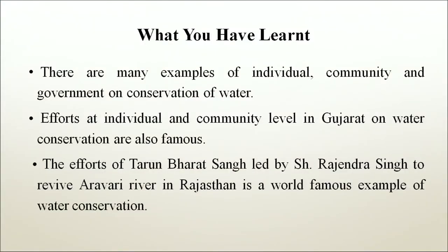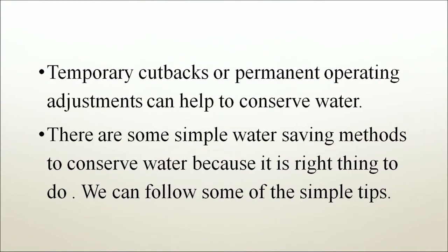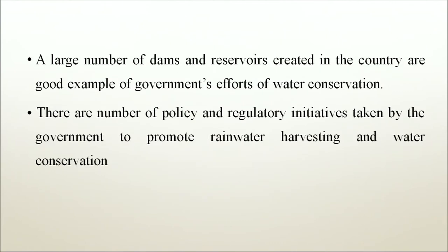To recap: there are many examples of individual, community and government conservation of water. Efforts at individual and community level in Gujarat on water conservation are well known. The effort of Tarun Bharat Sangh, led by Sri Rajendra Singh, to revive the Aravali river in Rajasthan is a world-famous example of water conservation. Temporary or permanent operating adjustments can help conserve water. There are simple water-saving methods we can all follow. A large number of dams and reservoirs in the country are good examples of government efforts. There are also many policy and regulatory initiatives taken by the government to promote rainwater harvesting and water conservation. This concludes Part 2 of Water Conservation at Different Levels. Thank you.